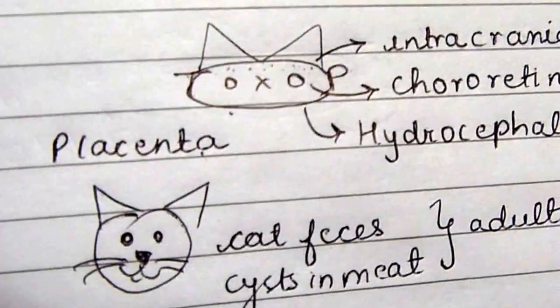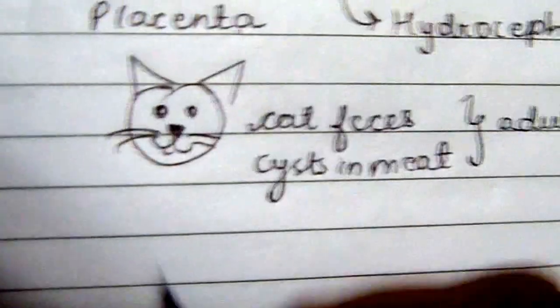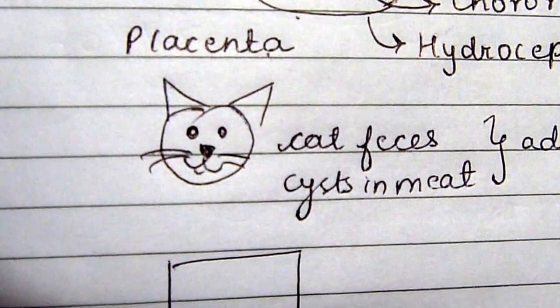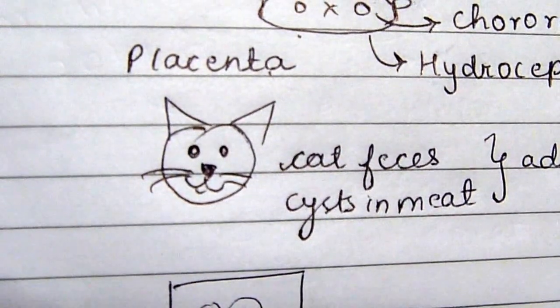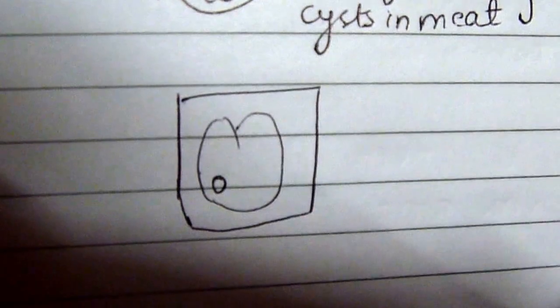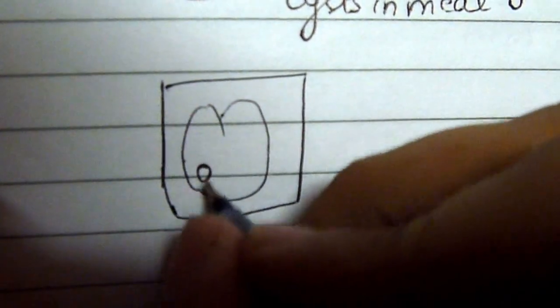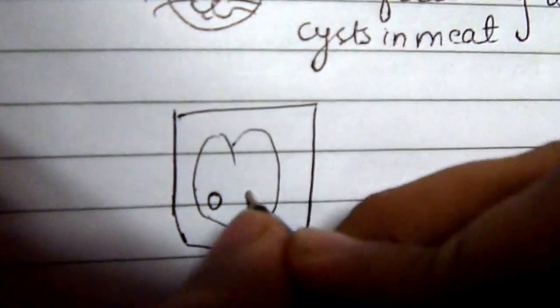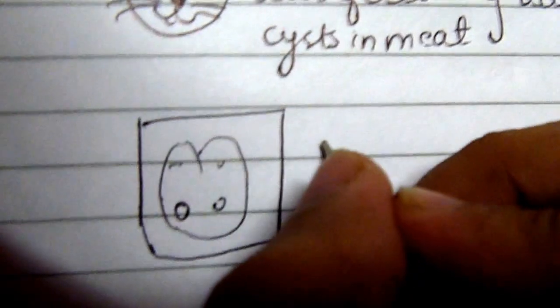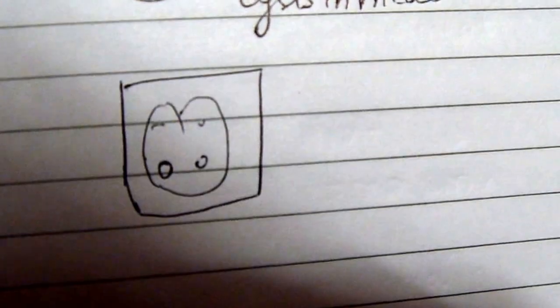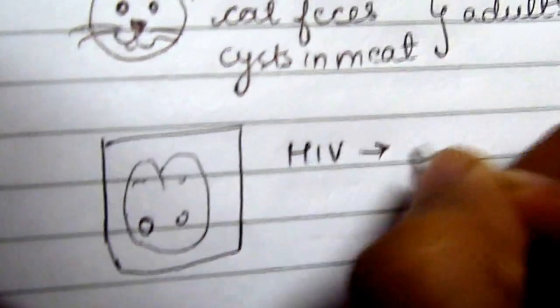In HIV-positive patients, it presents as ring-enhancing lesions on scans. This is a CT scan—that is a ring-enhancing lesion. There may be multiple ring-enhancing lesions as well, and your differentials might include neurocysticercosis.